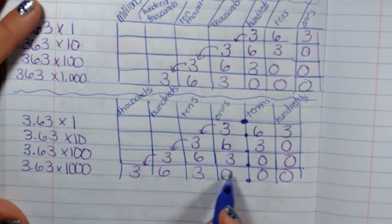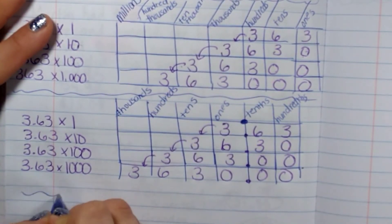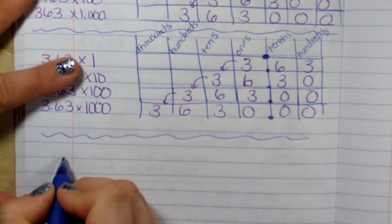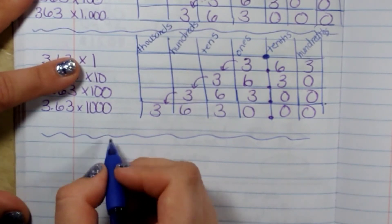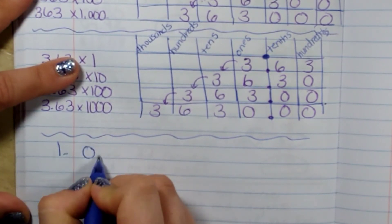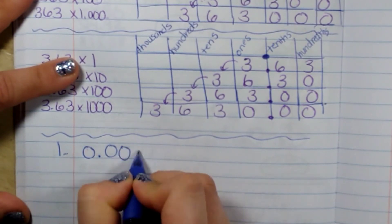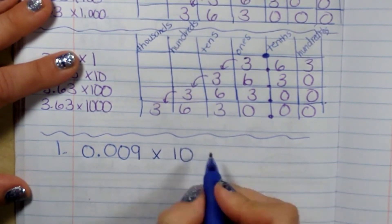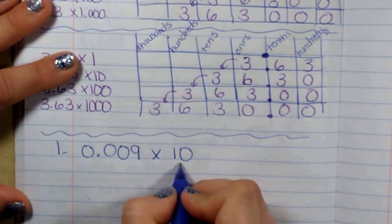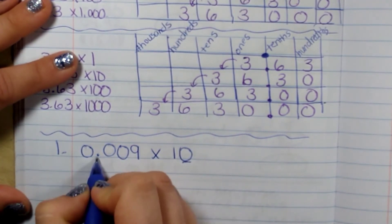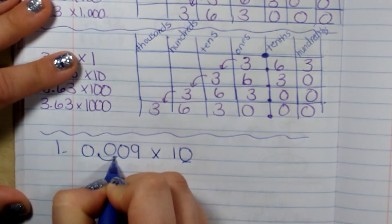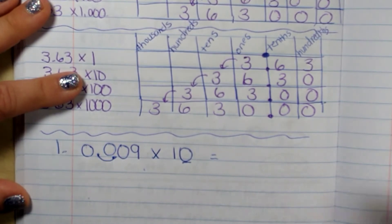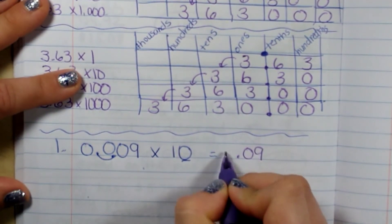Not using this chart, I'm going to be showing you how to move the decimal point. So if I have nine thousandths times ten, I am going to multiply it by ten. I'm going to move the decimal point. There's one zero, one place to the right. That makes it larger. So now my answer is nine hundredths.